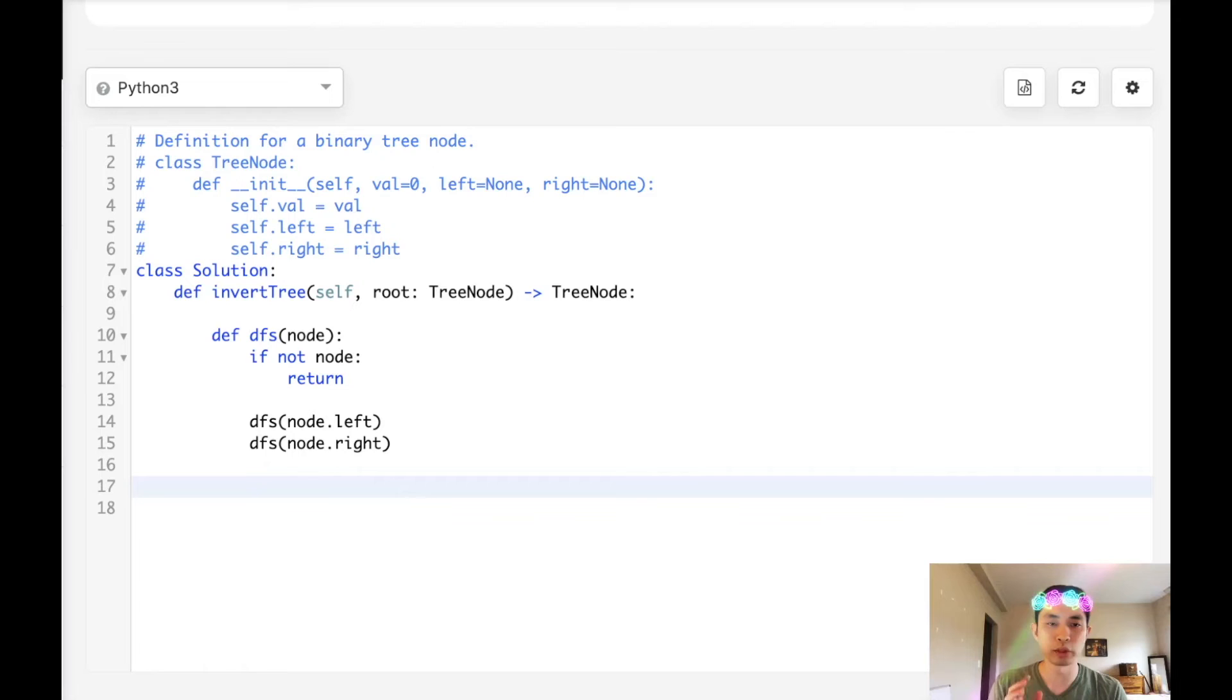And what we want to do once we hit our node, we want to flip the children right. We want to make left equal to right and right equal to left. So we can do that in Python by just saying node.left, node.right equals node.right and node.left. And that's going to end our helper method. Now we'll call that on the root. And we'll just return our root.